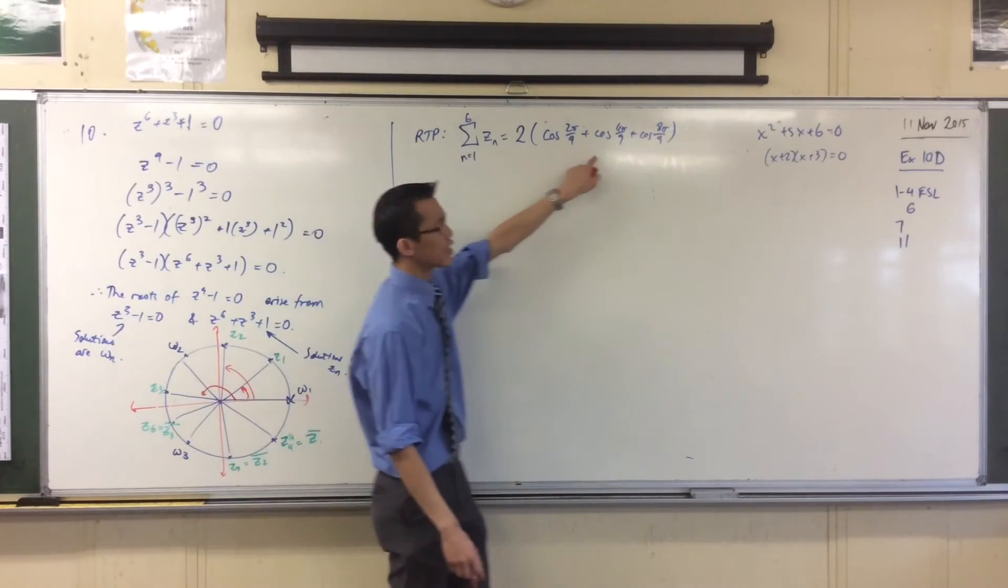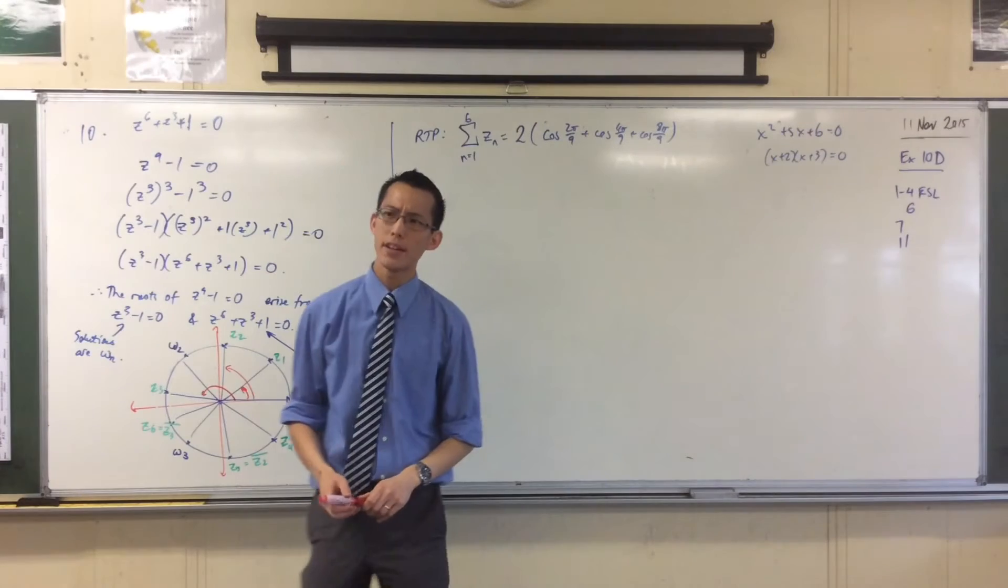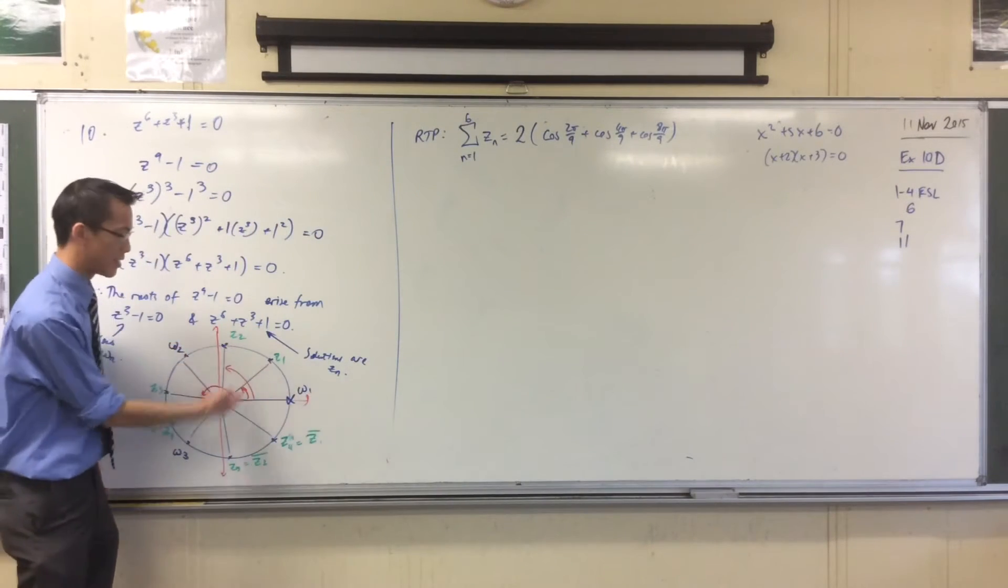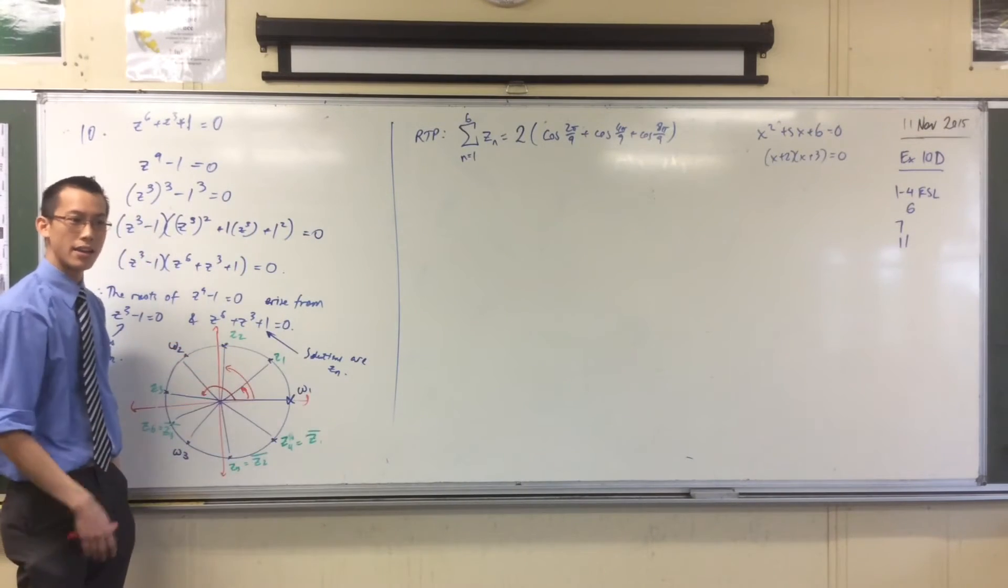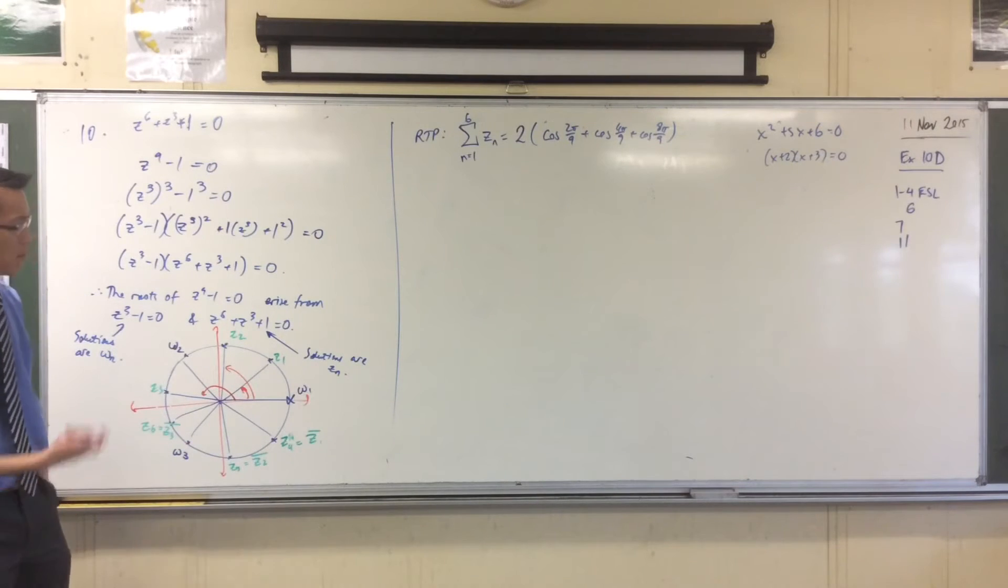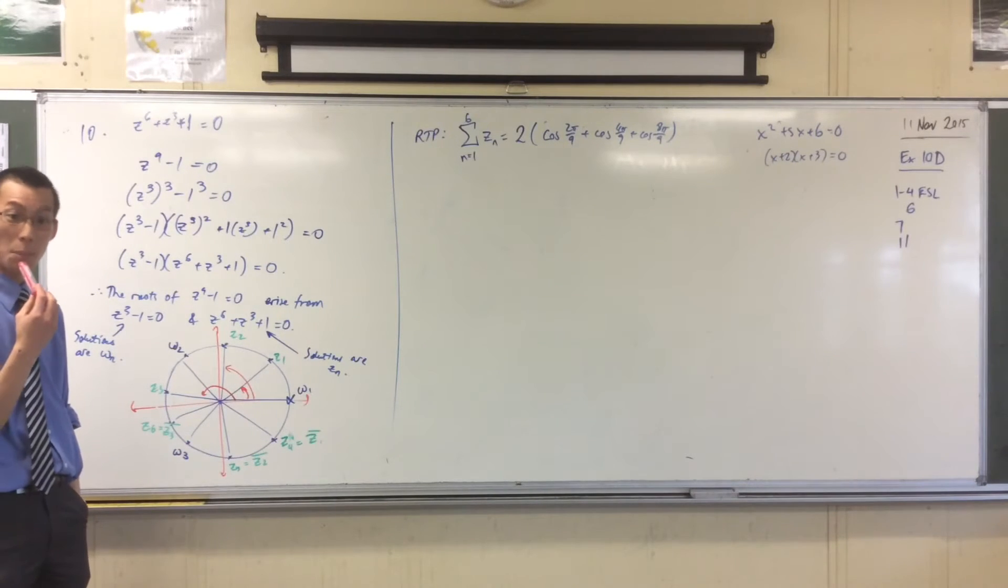Secondly, I only get cosines. Why have I only got cosines? Because each of these numbers has a cosine, a real part, and a sine, an imaginary part. Why don't the imaginary parts appear? There is an imaginary part, isn't there?